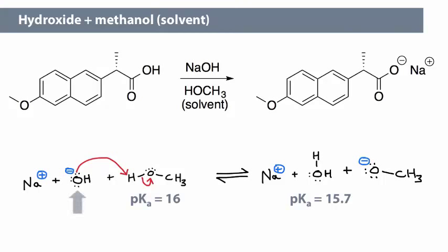If we compare the bases, hydroxide with the conjugate base methoxide, the negative charge is located on an oxygen atom in both cases. There is very little difference between the two.